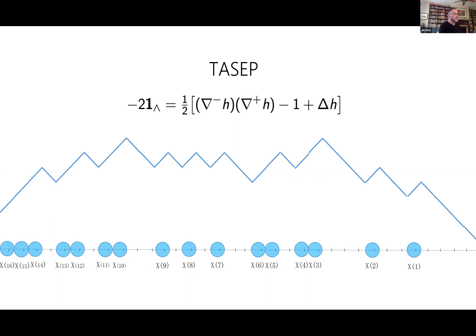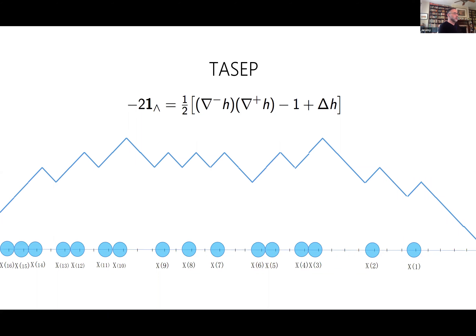Since nobody believes me that it's a discretization of KPZ, I'll prove it. The rate of jumping down is minus two times the indicator function that there's a local max — minus because it's jumping down, and two because when it jumps down it jumps down by two. By a little calculation, this is exactly equal to a half times the backward-looking gradient of H times the forward-looking gradient of H, plus the discrete Laplacian of H, minus one. The minus one should be thought of as the enormous constants in the model. You see the quadratic non-linearity in the slope and the Laplacian — so in that sense, TASEP is a discretization of KPZ.